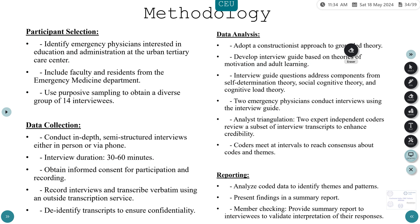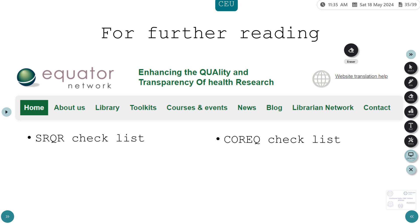To summarize how to conduct a qualitative study: identify physicians interested in your topic, find your sample, and collect data through one-on-one interviews, focus groups, or ethnographic methods. Obtain informed consent, record and transcribe interviews, de-identify the transcripts, and analyze data using grounded theory. Develop an interview-based questionnaire, use analyst triangulation with multiple coders, and report the analyzed data in terms of themes and patterns. For further reading, use the EQUATOR network, SRQR checklist, and COREQ checklist.